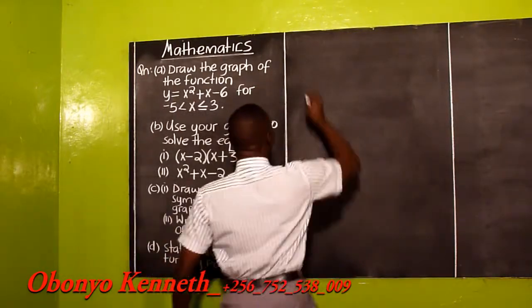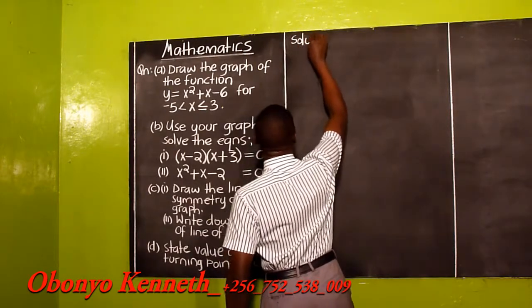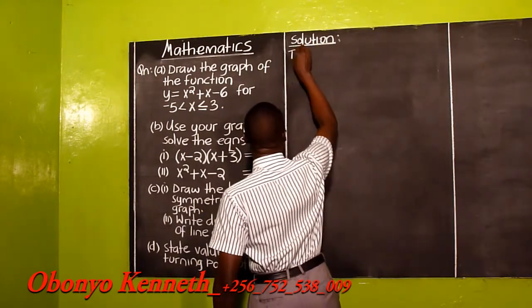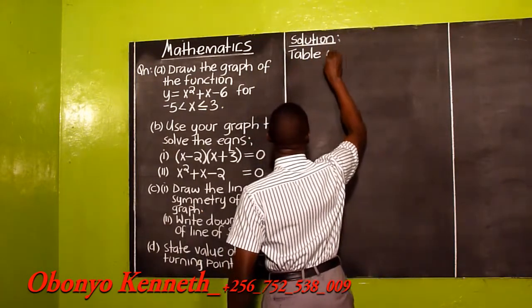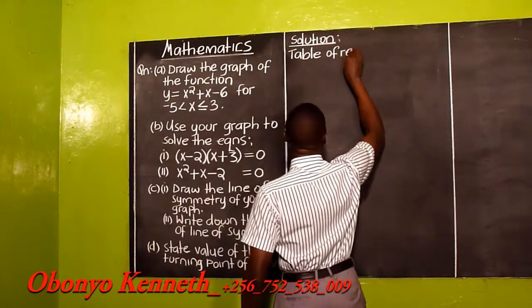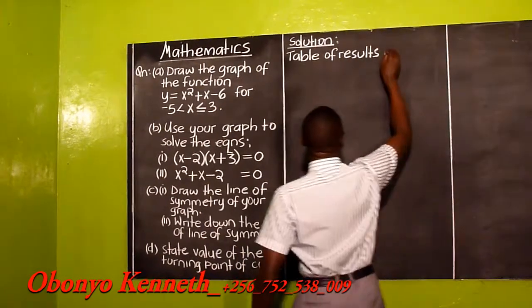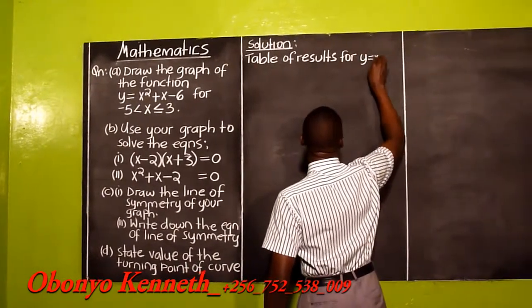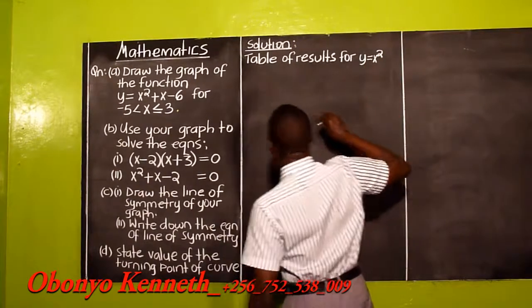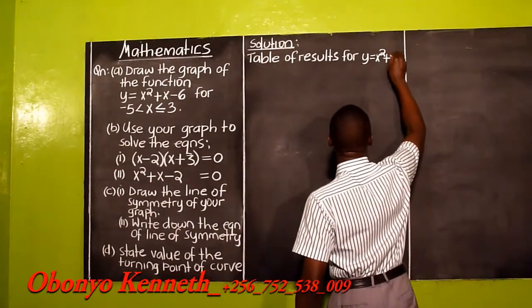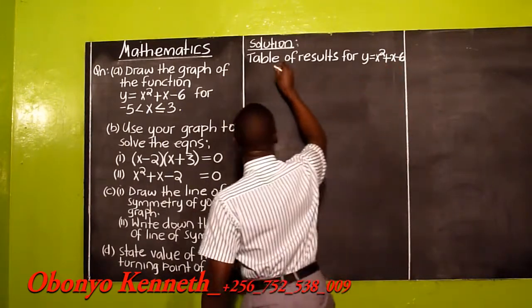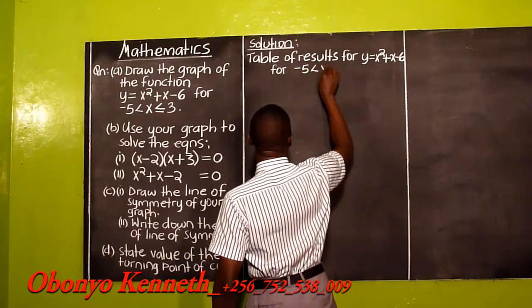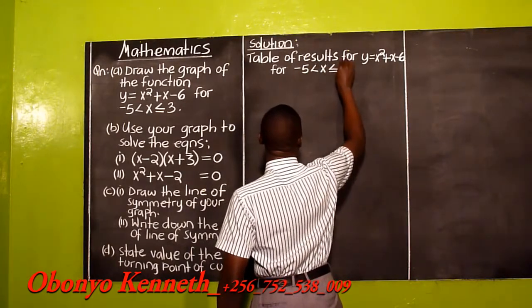Mr. Examiner saw in our solution table of results for the curve Y = X² + X - 6, for -5 < X ≤ 3.